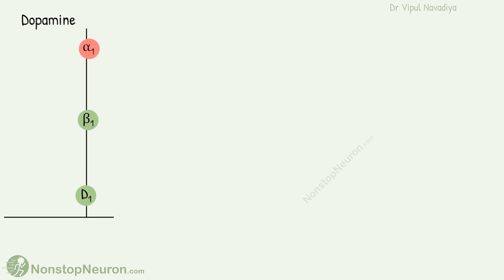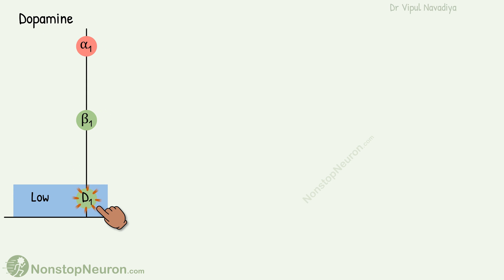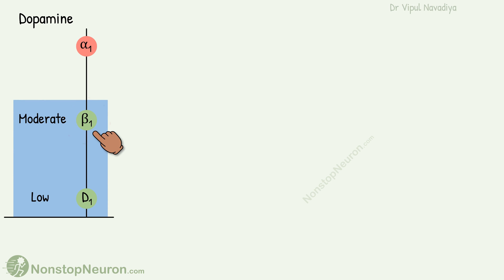The sensitivity of these receptors to dopamine is different. The dopamine receptors are the most sensitive, meaning they are stimulated even at a lower concentration of dopamine. The beta-1 receptors are moderately sensitive, so they are stimulated at relatively higher concentrations.